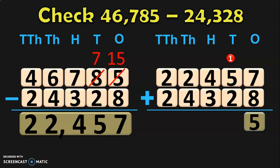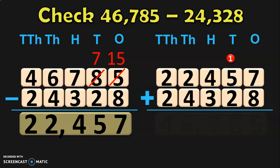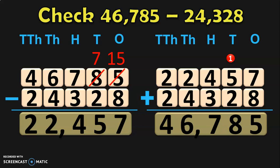Now add the digits in the tens place: 1 plus 5 is 6, and 6 plus 2 is 8. Now move on to the hundreds place where you have 4 plus 3, which gives you 7. Next in the thousands place you have 2 plus 4, which gives you 6. Next in the ten thousands place you have 2 plus 2, which gives you 4. So the sum — when you add the subtraction answer with the smaller number — gives you the bigger number 46,785, which means that your subtraction operation is correct.